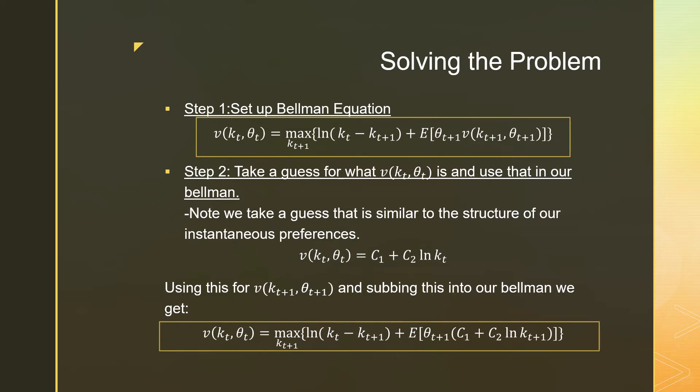Step number two is that we're going to take a guess for what V(K, θ_t) is and use that for our Bellman. Again, we're just going to follow the structure of our preferences to inform what we have here. So our structures are log, and our other part, if we were to take the natural log of K_t, that's just log K_t. We don't have any theta over here because that doesn't enter into our initial production function or the initial cake size. Subbing this into our future value function, we get the following over here.